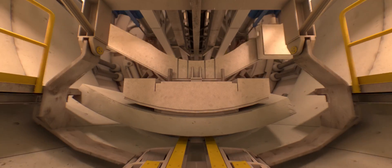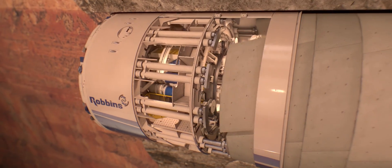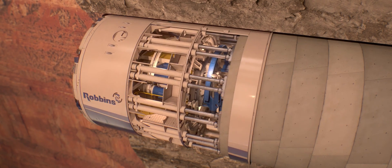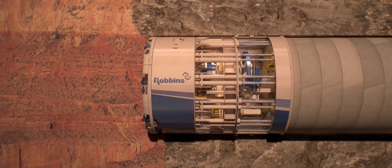Once a segment ring has been built, the TBM advances forward by transferring thrust to the tunnel lining. Thrust cylinders extend and the machine bores forward before erecting a new ring. When ground conditions change, the XRE can be converted to EPB mode and can operate in both pressurized and non-pressurized configurations.